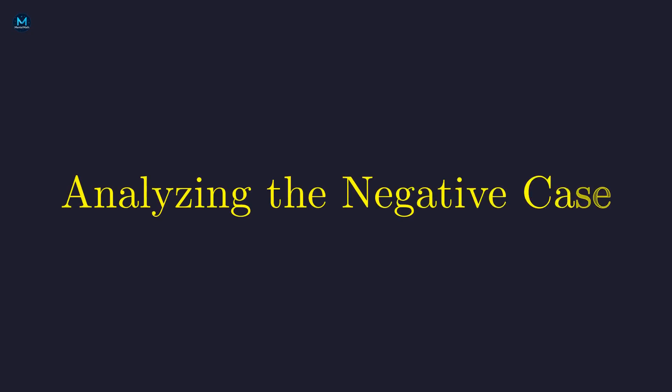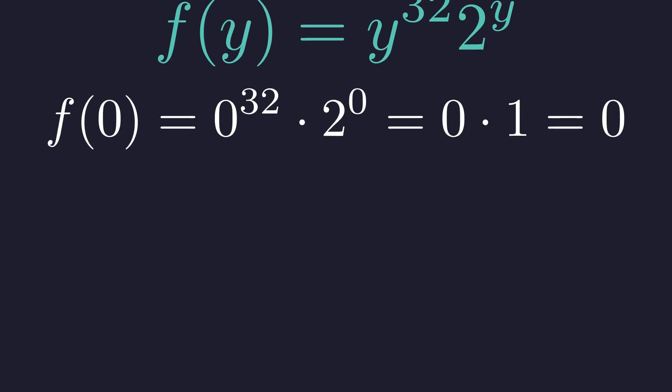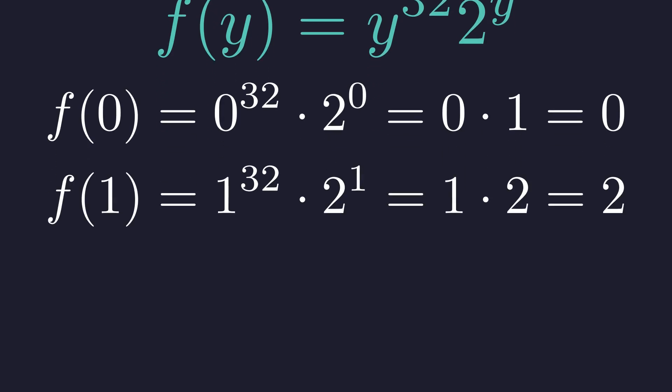To see if this equation has a solution, let's analyze the function on the left. Let's define a function f of y equal to y to the 32nd times 2 to the y. Remember, y must be positive. At y equals 0, the function is 0. At y equals 1, the function is 2.